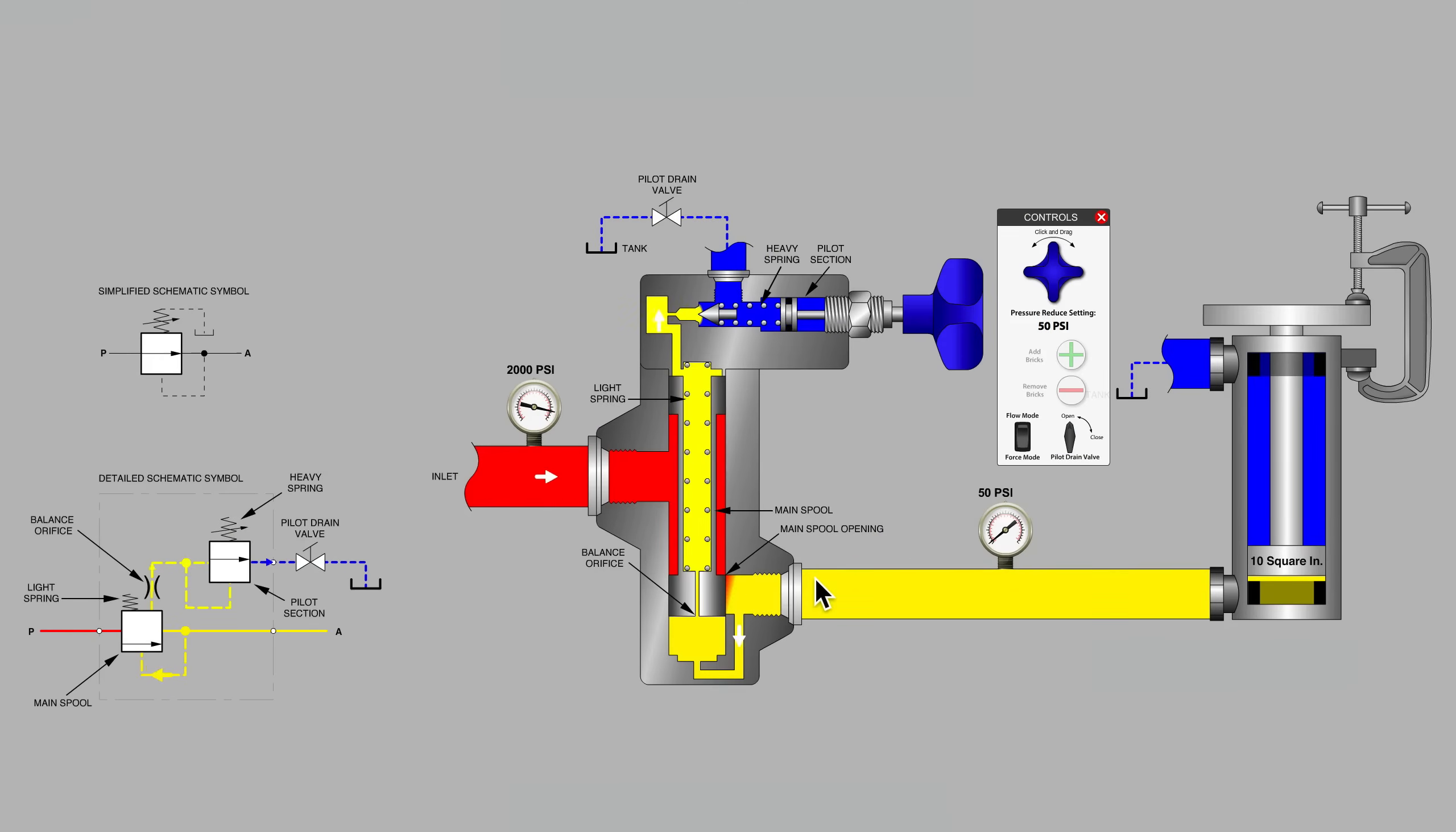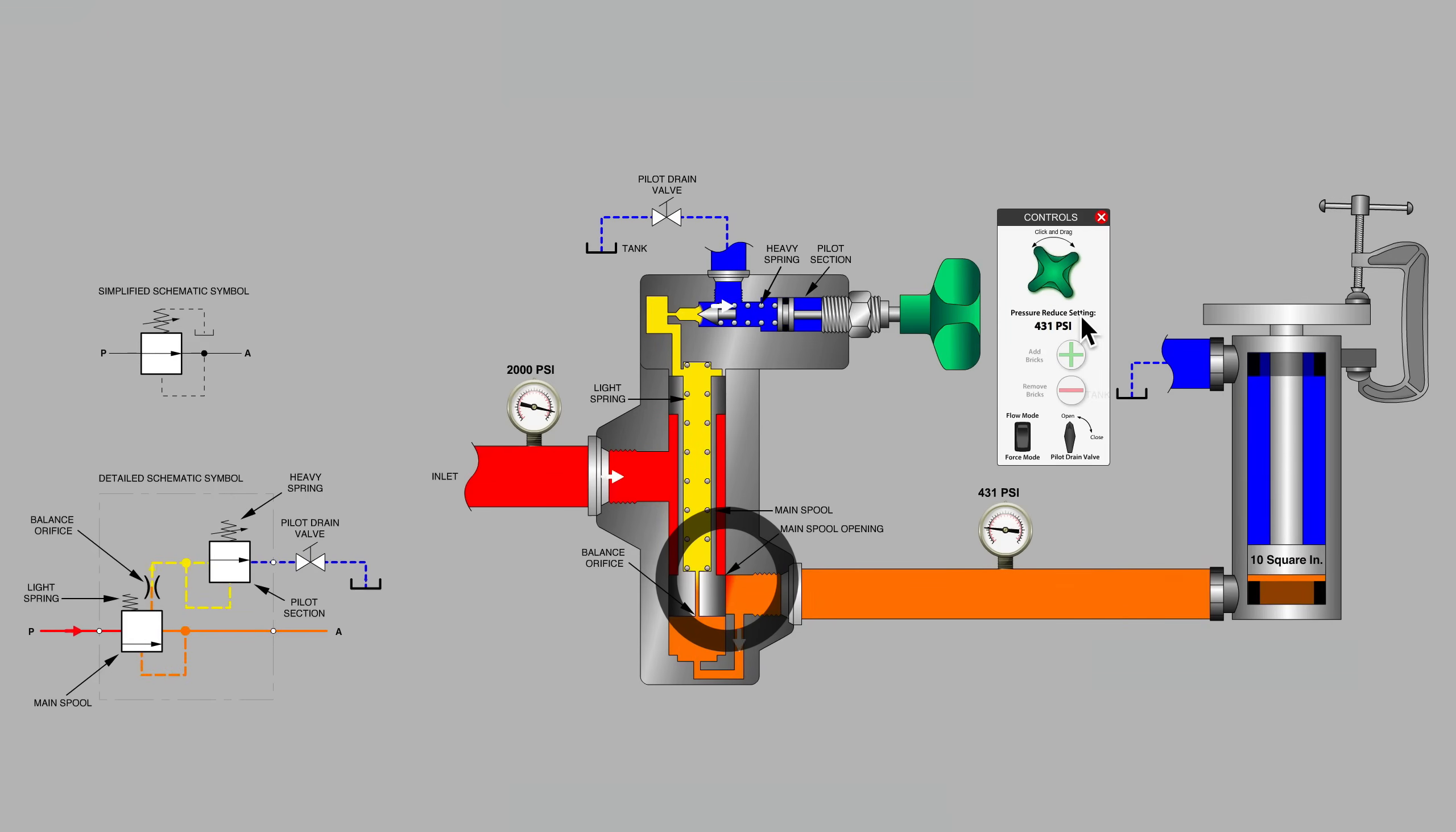Remember that there is no continuous flow path in this sub-circuit to the cylinder. Observe here at the main spool opening. If we quickly increase the pressure setting of the valve, the spool is opened for a longer period of time in order to bring more of the inlet pressure through to the outlet.